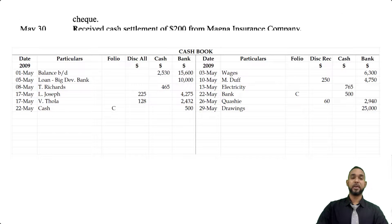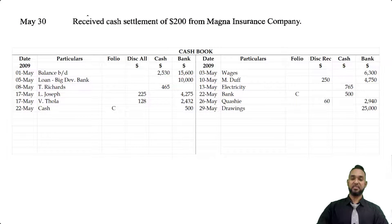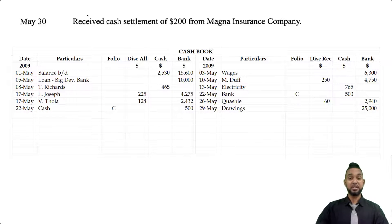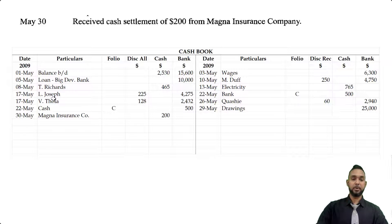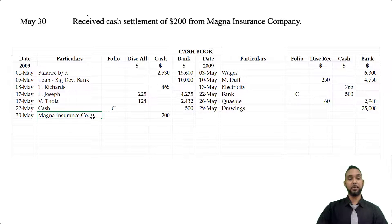Finally, on May 30th, we received a cash settlement of $200 from Magna Insurance Company. If we receive that cash settlement, money is coming into us and our cash account is increasing. Cash is an asset; to record an increase in an asset, you debit the asset account. So on the debit side of the cash book, under the cash column, you're going to see $200, coming from Magna Insurance Company.